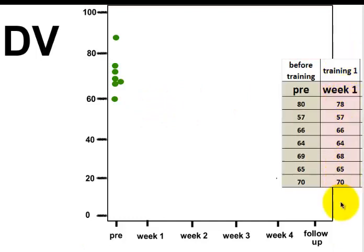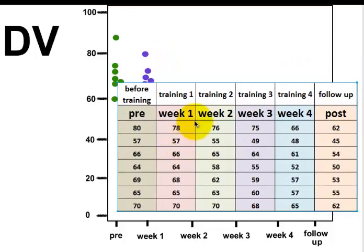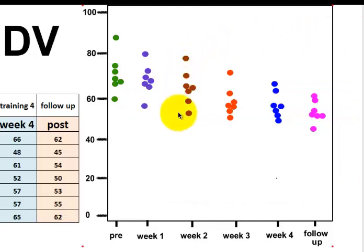We're going to go to the second measurement, which is week one. This is after the first week of training. We're going to graph those numbers - 78, 57, and so on. They're going to look like that. And we're going to graph each one of these columns - each week of training and the follow-up. And it kind of looks like that.